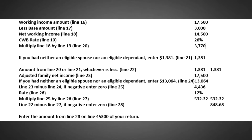Since you had neither an eligible spouse nor an eligible dependent, we enter the amount of $1,381 on line 21, as shown on the screen. You need to write the amount from line 20 or line 21, whichever is less, on line 22. In this case, $1,381 is the lower amount, so we enter this instead of $3,770. Adjusted family net income is assumed to be the same as working income, that is $17,500, and we enter the amount of $13,064 on line 24.